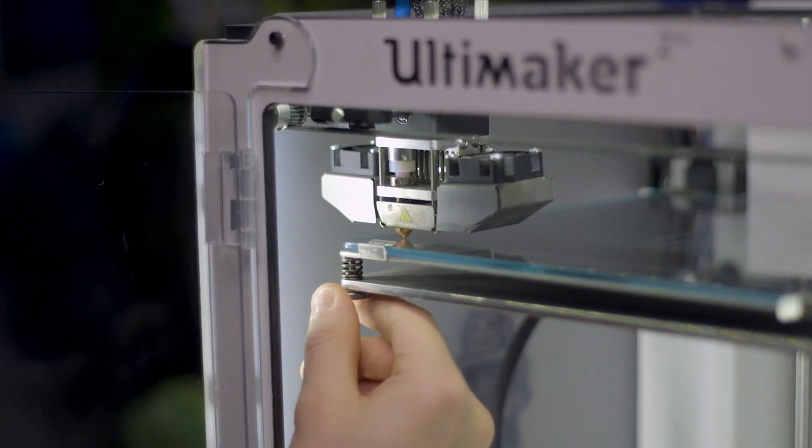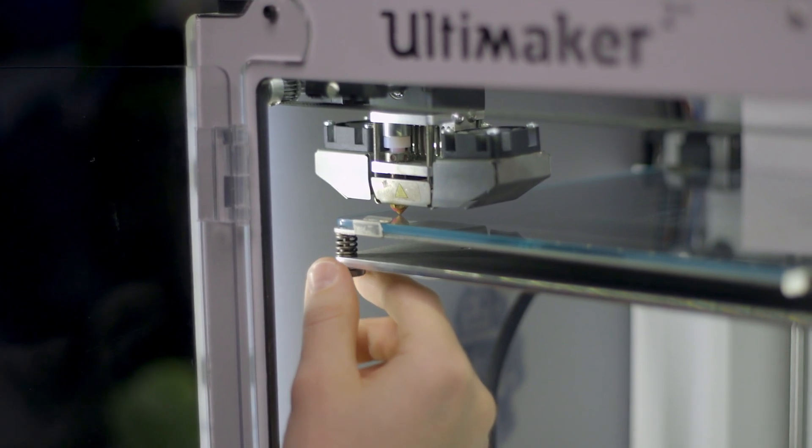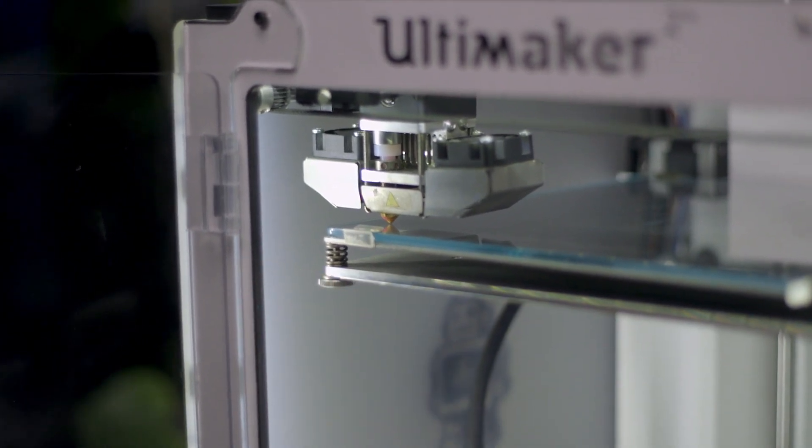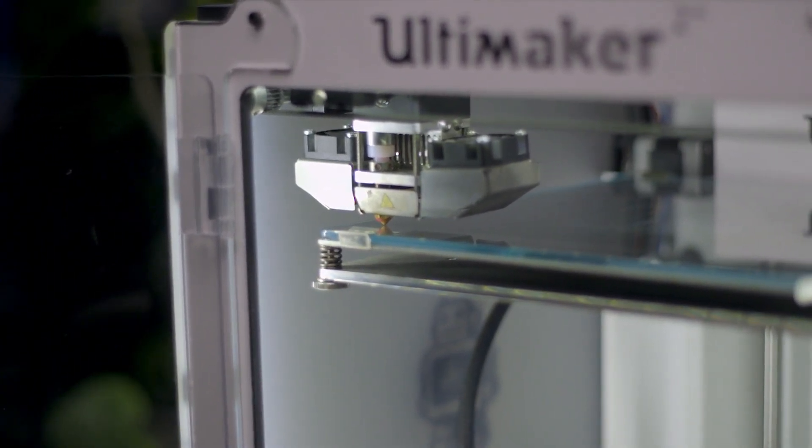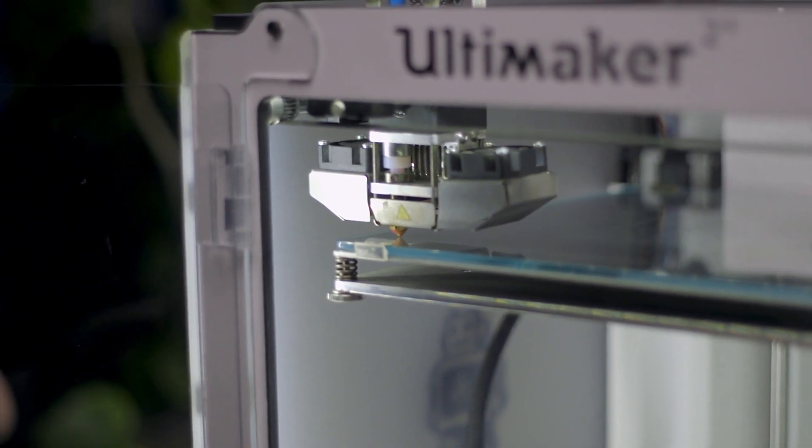Simply put, leveling your printer's bed is exactly as it sounds. You want to make sure your bed is level so there is a precise distance between the nozzle and the entire surface of the build plate. Now you can't just put a standard bubble level on your bed and call it a day, because the level we are looking for is between the nozzle and the print surface, not the nozzle and the workbench, desk or floor that your printer is sitting on.